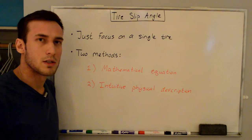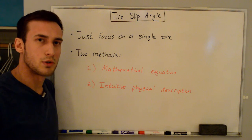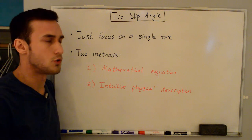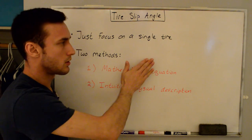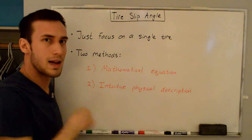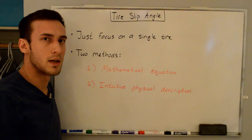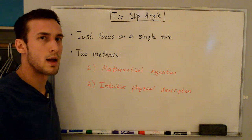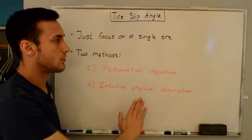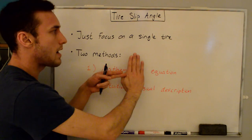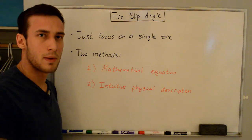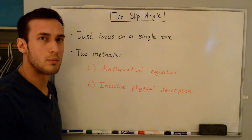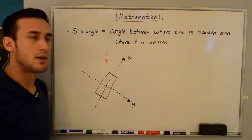It's important to note that tire slip angles can be produced in different ways. The first way: imagine you're driving on a straight road and you turn the wheel to turn the car — that input produces a slip angle. In another way, if a gust of wind comes from the side and blows you sideways, the wind has produced a slip angle with no input from you. So let's start with the mathematical method.